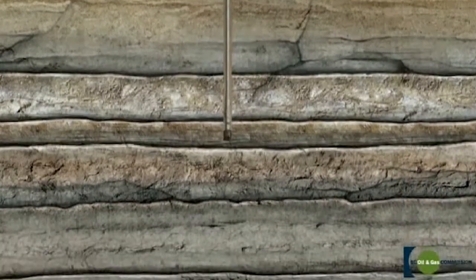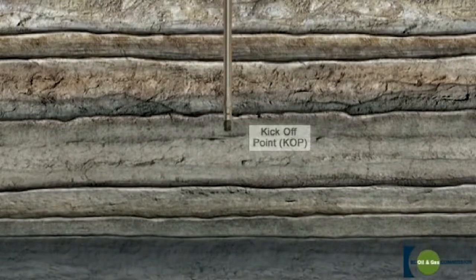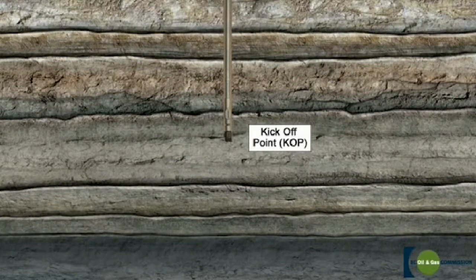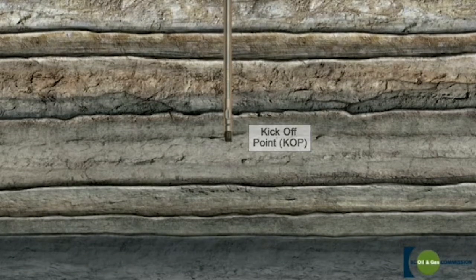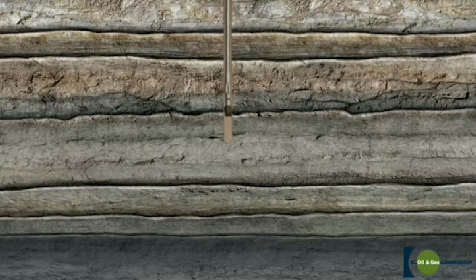This depth is called the kickoff point, where the curve will begin so the horizontal section can be drilled. Up to this point, the process is the same as drilling a vertical well.